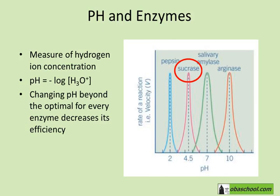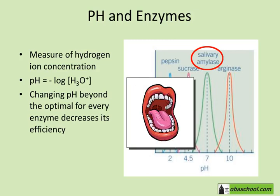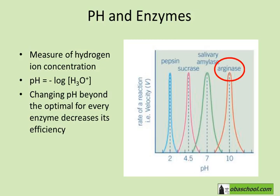Sucrase has a 4.5 optimal pH. Salivary amylase has a neutral pH of 7 — salivary amylase works in the mouth, and the mouth has a neutral medium. And arginase works at a basic medium with a pH of 10. So these four enzymes work inside the same body, but at different pHs.